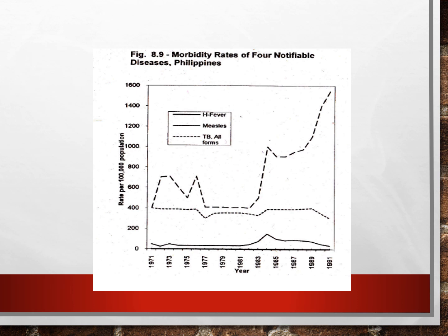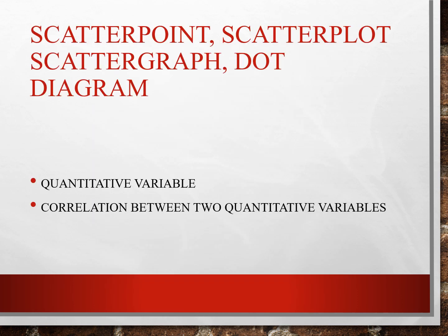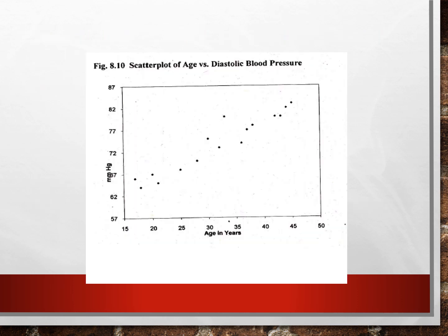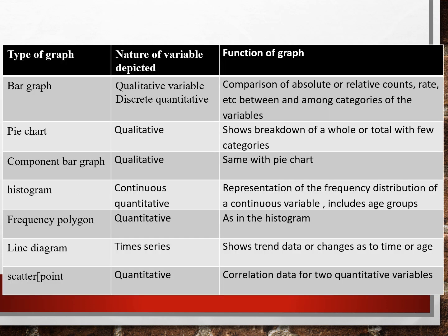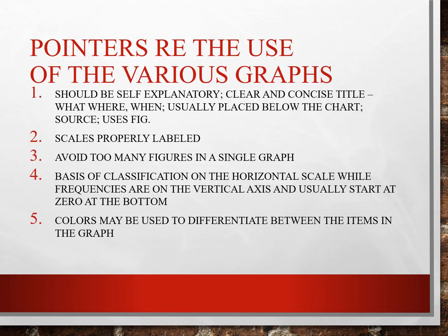This would show morbidity rates of foreign notifiable diseases in the Philippines. Scatter plot is used for quantitative variables showing correlations between two quantitative variables. This is a summary table of types of graphs, variables depicted, and functions of graphs — each would have its own advantages and disadvantages for us to learn and present data for our research.